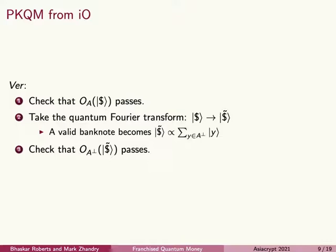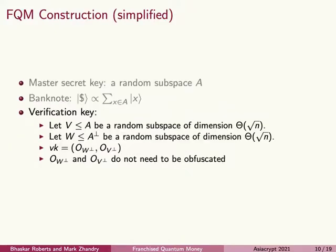So if we want to get around using IO, we have a problem. We want to give the verifier the oracles without also giving them to the adversary. But we want to allow anyone, even a potential adversary, to verify banknotes. The solution is to give every verifier a unique key — in particular, we'll give each verifier some of the dimensions of A and A-perp, but not all of them. Our franchised quantum money construction illustrates this idea.